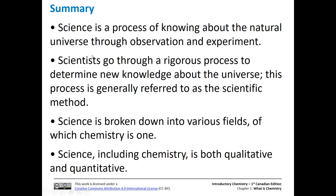So in summary, science is the process of knowing about the natural universe through observation and experiment. And basically, we go through a rigorous process to determine new knowledge about the universe. And we call that method or that process the scientific method. Science is broken down into various fields, and chemistry is one. And chemistry is both qualitative and quantitative. So we'll see that as we go through the course, and especially in your lab.